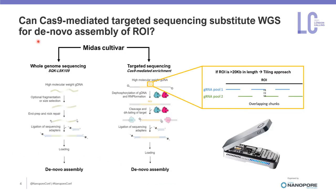However, the novel assembly of a cultivar-specific genome can be costly as well as time-consuming. Here, we tested the possibility to use Cas9 targeted sequencing as an alternative to canonical nanopore whole genome sequencing for the novel assembly of a region of interest. To do so, we tested both approaches in parallel.